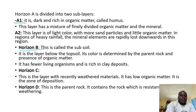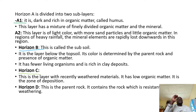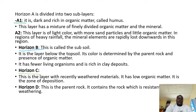Then we have horizon C. Horizon C is partly weathered. It has a layer with recently weathered materials. It has raw organic matter and it is a zone of deposition. Minerals move from horizons A and B and are deposited in C — leaching takes place in A, it can even affect B, and then minerals are deposited in C. When we reach S6, we shall study processes like eluviation and leaching and understand more about the deposition of minerals from one layer to another, vertically or horizontally.